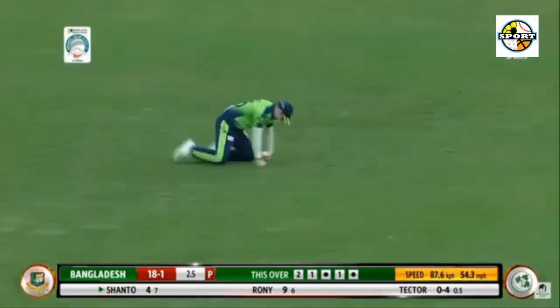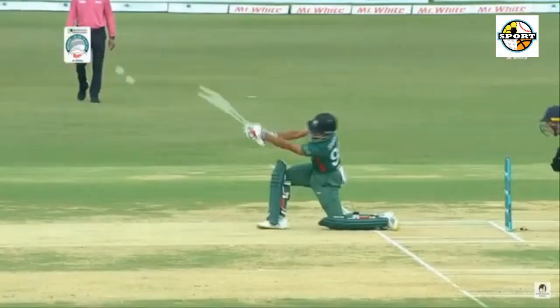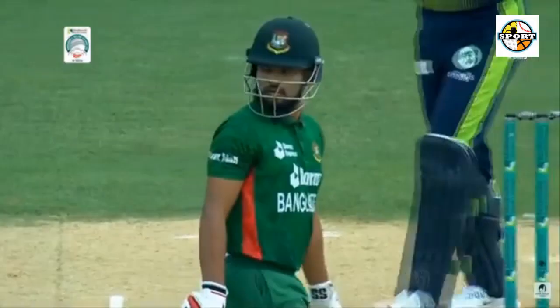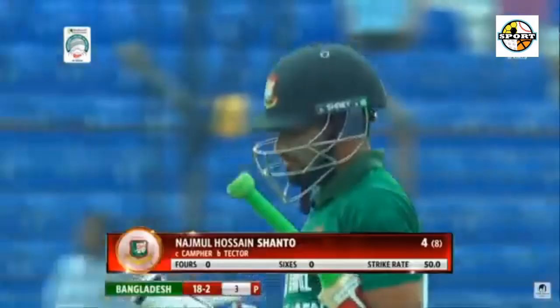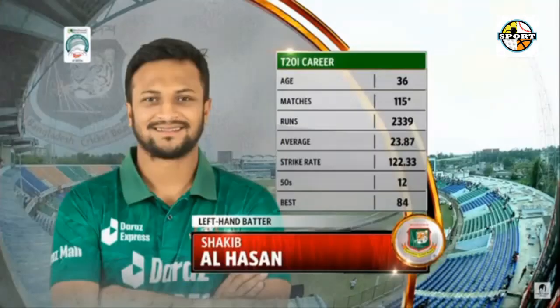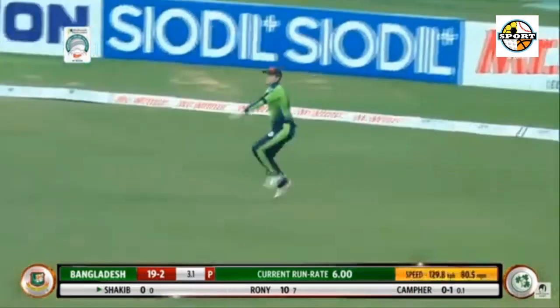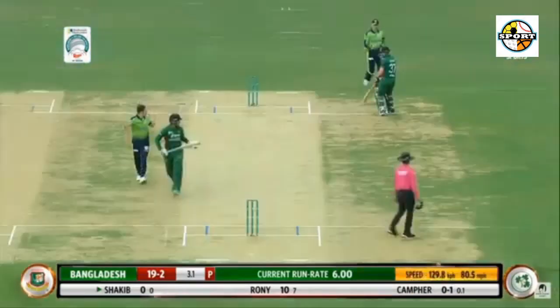5.4: Markadare to Shakib, 4 — short and wide, Shakib chases after the loose ball and cuts it away through point for a boundary. 5.5: Markadare to Shakib, out caught by Benjamin White. Short on the body, Shakib plays a half-hearted pull that goes straight towards the catching mid-wicket fielder. Markadare strikes again; Bangladesh have lost their skipper.